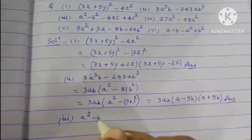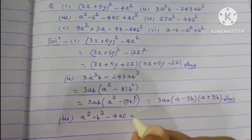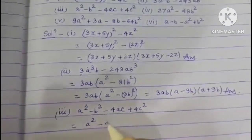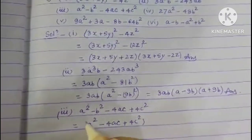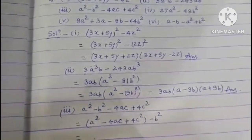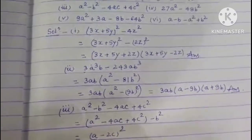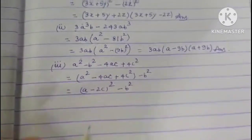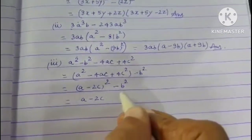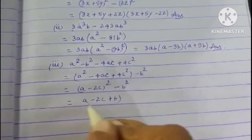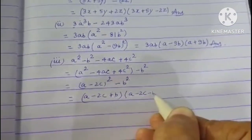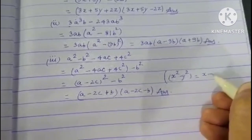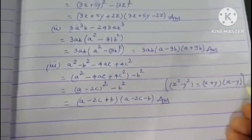Third question: a² - b² - 4ac + 4c². Grouping: (a² - 4ac + 4c²) - b². We recognize (a² - 4ac + 4c²) = (a - 2c)². So it becomes (a - 2c)² - b², which by x² - y² = (x+y)(x-y) gives (a - 2c + b)(a - 2c - b).